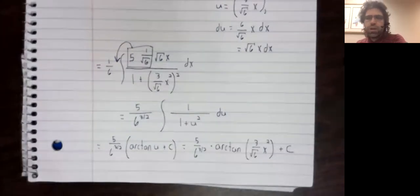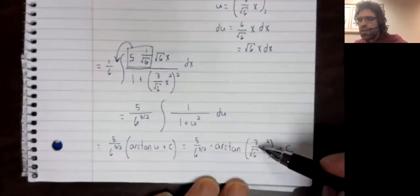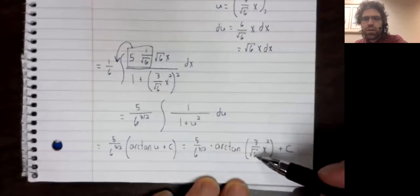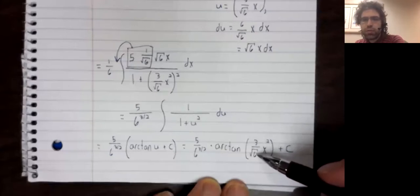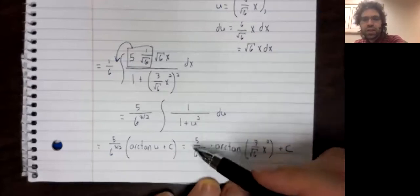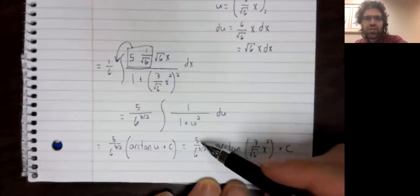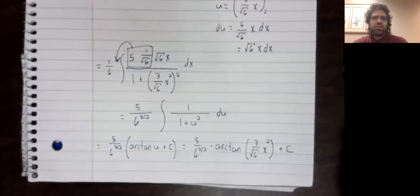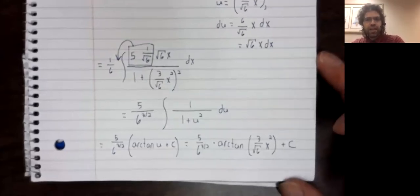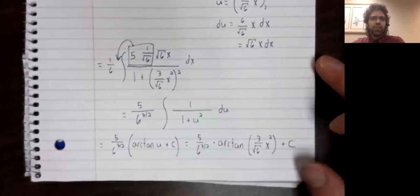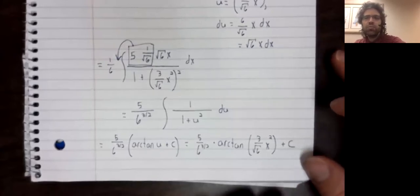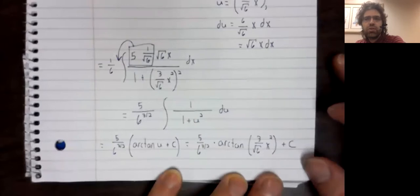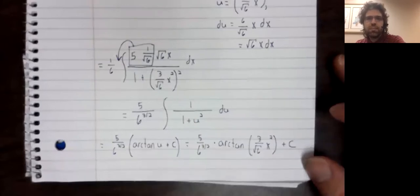If you compare this to my notes, 3 over the square root of 6 is the square root of 3 over the square root of 2. This is 5 over 6 times 1 over the square root of 6. So a slightly different looking answer in my video than in my notes, but it is the same solution, of course.